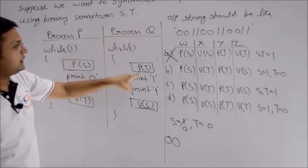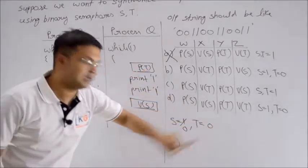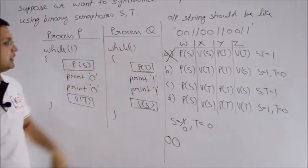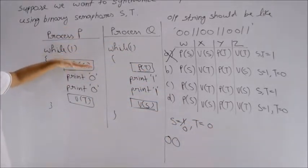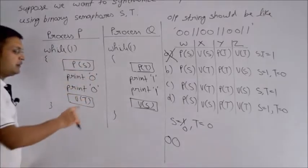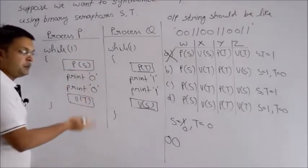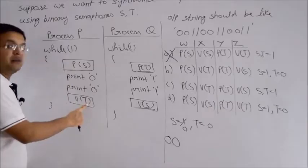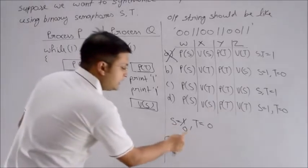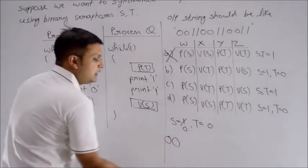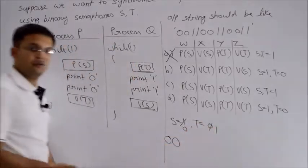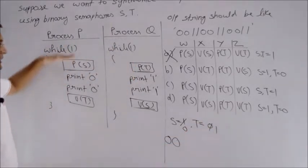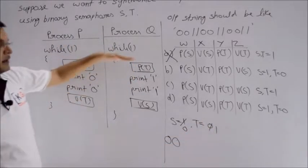Even after printing one 0, imagine if a context switch happens - it still won't matter. Process Q still can't run because T's value is still 0, so it can't be decremented. Finally, process P will complete. But notice - it's not incrementing S again; it's doing V of T. So after this work, S remains 0, but T's value becomes 1. This process is triggering the other process.